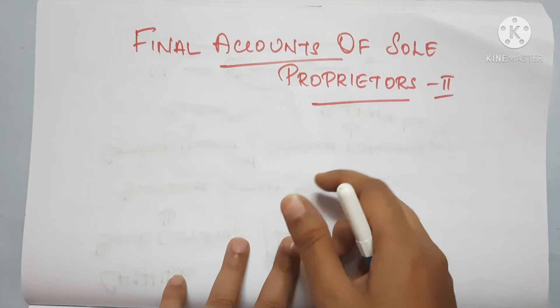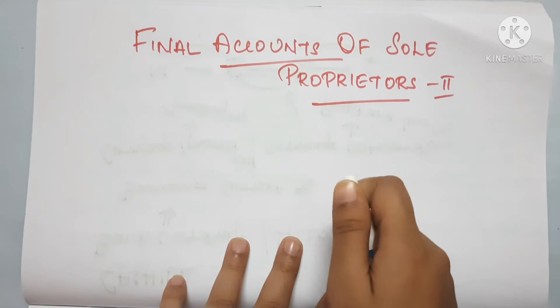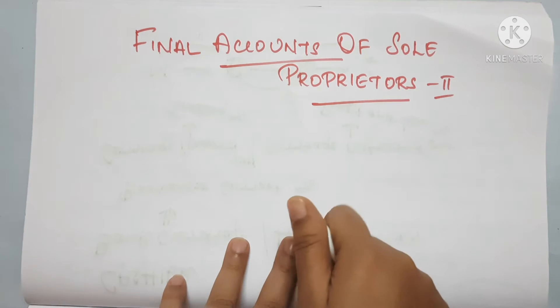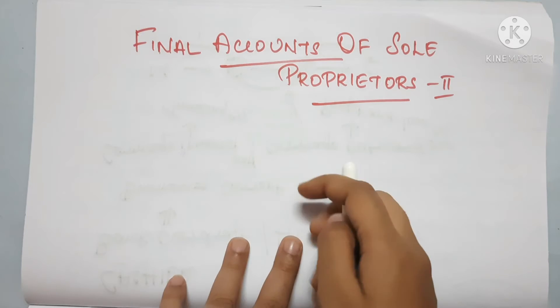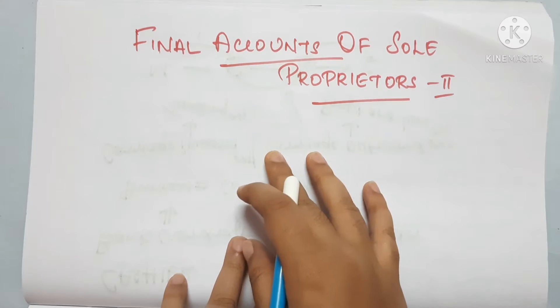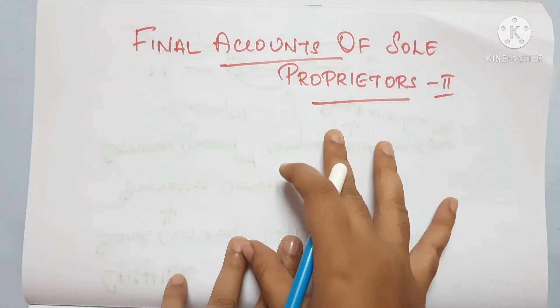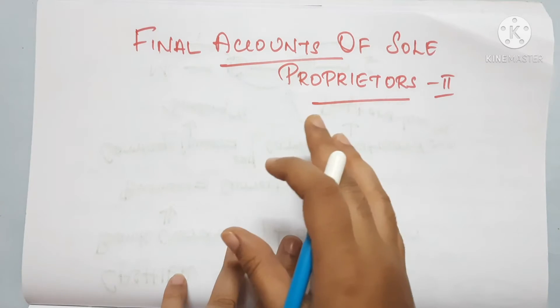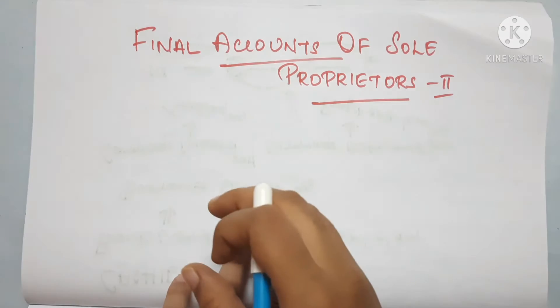We are going to do a direct adjustment in this chapter. We are already aware of the final accounts — it contains a lot of processes.